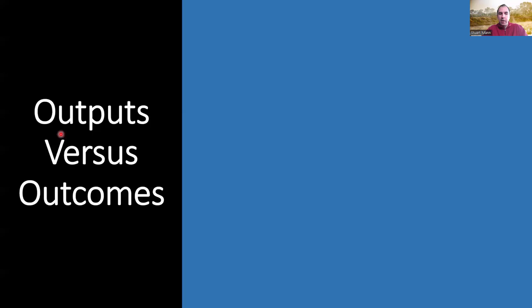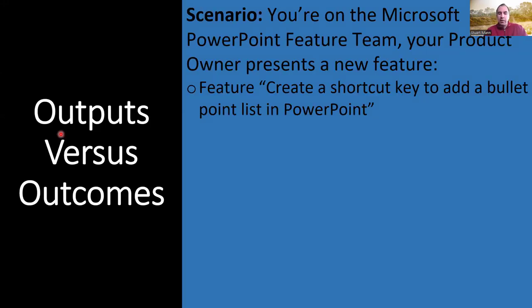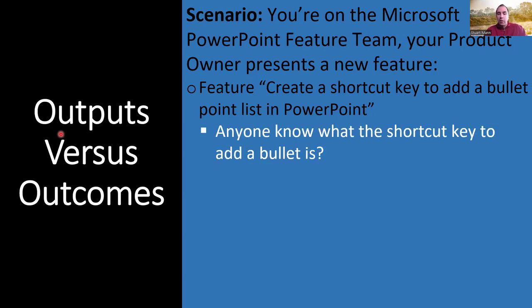To get going, let's start with a little exercise to illustrate the difference between outputs and outcomes — one of the central themes of this webinar. Consider the scenario that you are part of the Microsoft PowerPoint feature team and I come to you as product owner and say: I want you to create a shortcut key to add a bullet point list inside PowerPoint. Obviously it can't be Ctrl+B because that turns things bold.